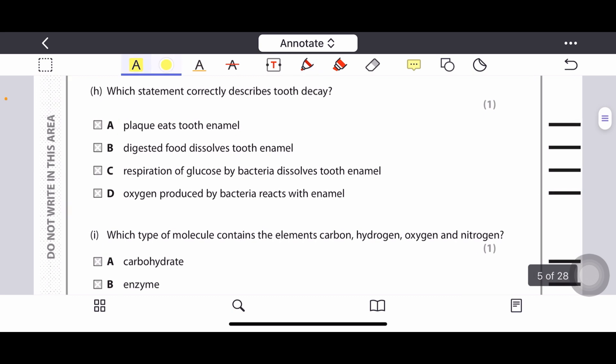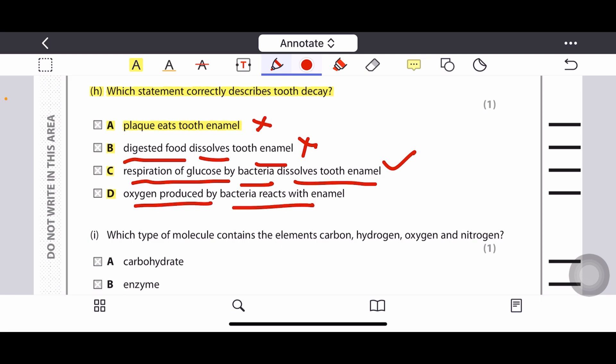Question H: Which statement correctly describes tooth decay? Option A: plaque eats tooth enamel. No, plaque does not eat tooth enamel. Digested food dissolves tooth enamel? No, it is not by digested food. Respiration of glucose by bacteria dissolves tooth enamel? Exactly. Because when the bacteria feed on the waste products or the food debris in the mouth, they respire, and due to their respiration, the respiration of glucose actually dissolves the tooth enamel. Oxygen produced by bacteria reacts with enamel is also wrong. So option C is the best option.